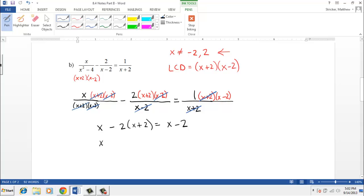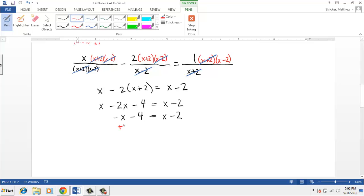And we can distribute. We have x minus two x, and then minus two times four is a negative four equals x minus two. We can combine some like terms here. X minus two x is a negative one x, minus four equals x minus two. And we can go ahead and add x to both sides. So if we get the x's on the right-hand side, then we need to get the numbers on the other side. So that's going to make this a plus two. And we end up with two x equals negative two.